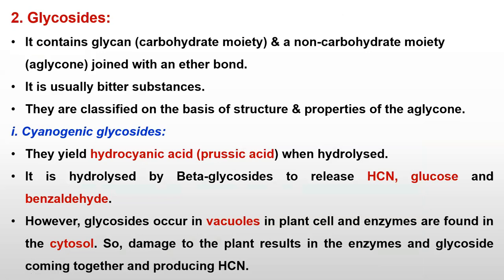Next to alkaloids are glycosides. Glycosides contain a glycan, that is a carbohydrate moiety, and a non-carbohydrate moiety called the aglycone. They have both glycan and aglycone joined by an ether bond. Glycosides are classified based on the structural properties of the aglycone.